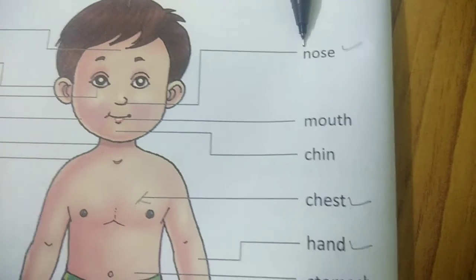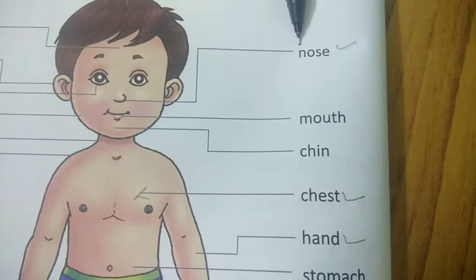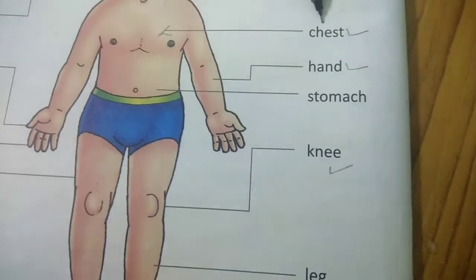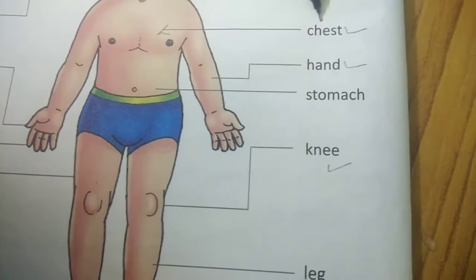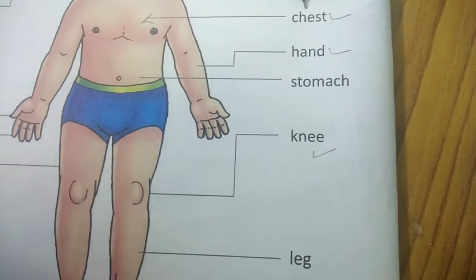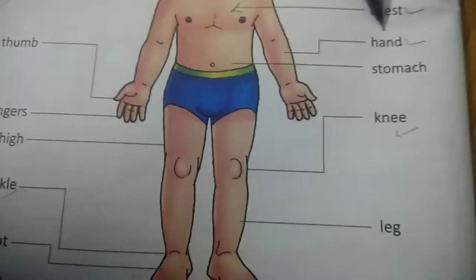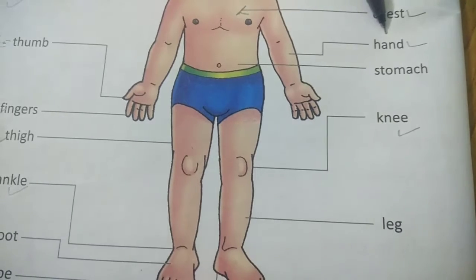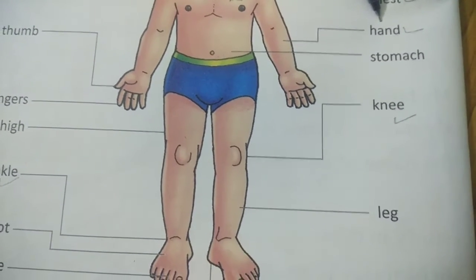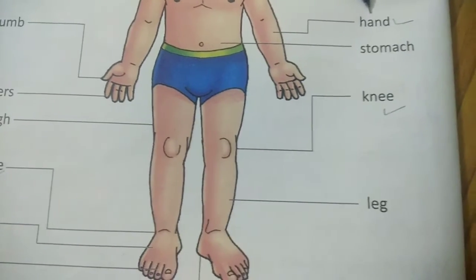Nose: one of the five sense organs on the face, used to breathe or smell. Chest: the front surface of a person's or animal's body between the neck and the stomach. Hand: the end of a person's arm beyond the wrist, including the palm, fingers and thumb.